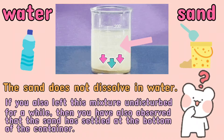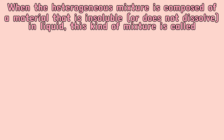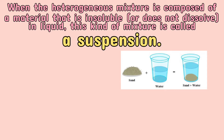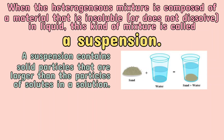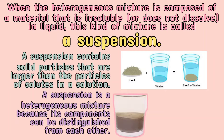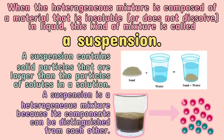When a heterogeneous mixture is composed of a material that is insoluble, or does not dissolve in a liquid, this kind of mixture is called a suspension. A suspension contains solid particles that are larger than the particles of solutes in a solution. A suspension is a heterogeneous mixture because its components can be distinguished from each other.